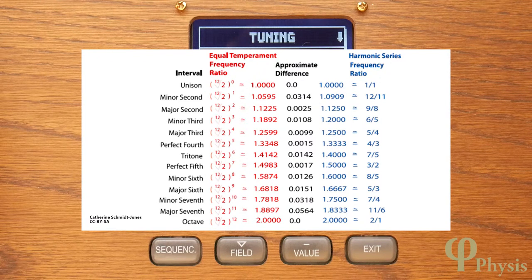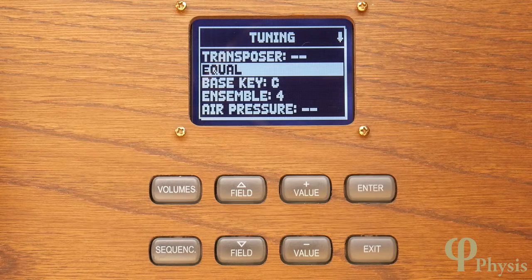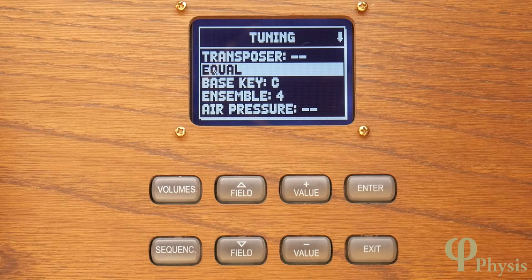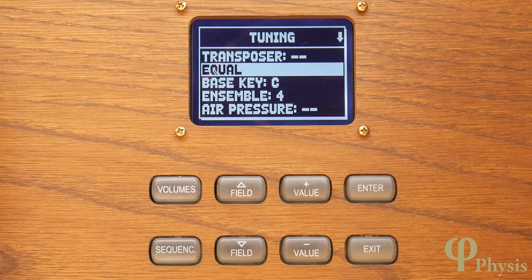These alternatives make some intervals and keys more in tune than others. Each has its adherents and you may find that some baroque and early music sounds better in one of these, for example. I'm not planning to go into the intricacies of historical temperaments here, but it's perhaps enough to show that you are unlikely to run out of possibilities with a Physis organ.